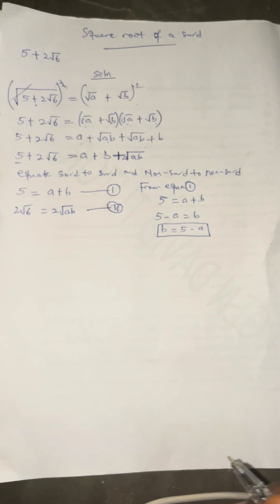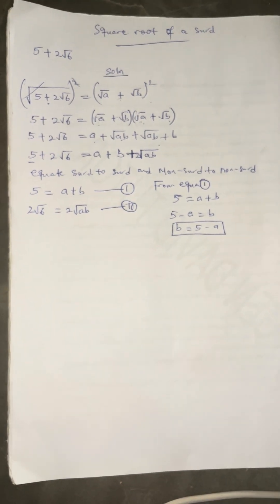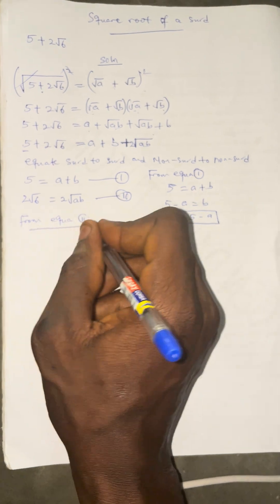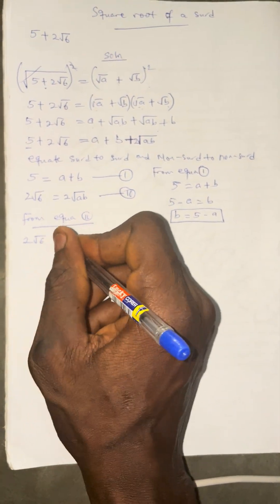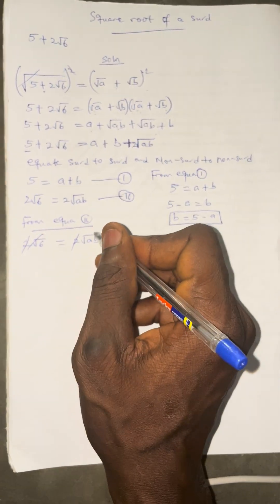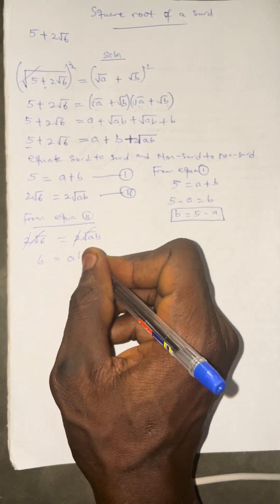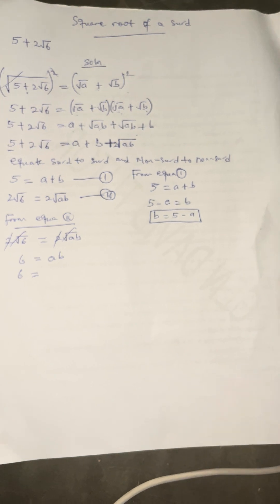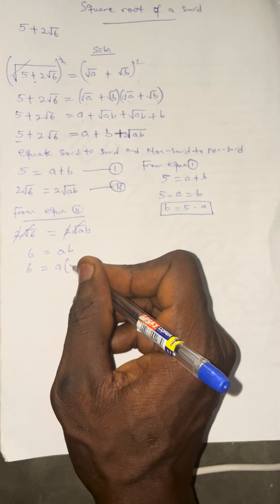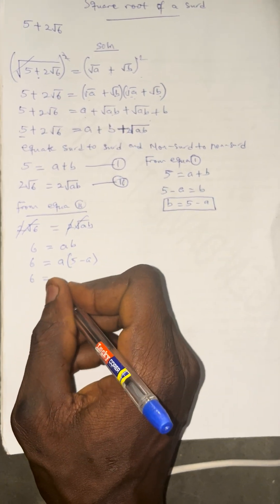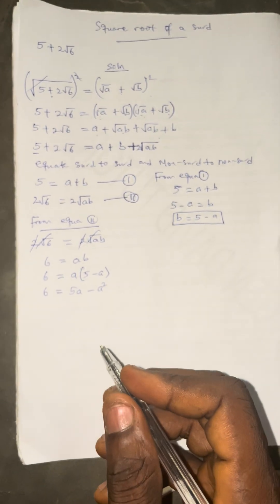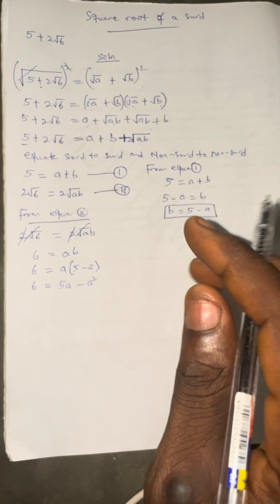From equation 2, 2 root 6 equals 2 root AB. Cancelling the 2s and the roots, we get 6 equals AB. Substituting B equals 5 minus A: 6 equals A times (5 minus A). Expanding: 6 equals 5A minus A squared. Rearranging gives the quadratic equation: A squared minus 5A plus 6 equals 0.